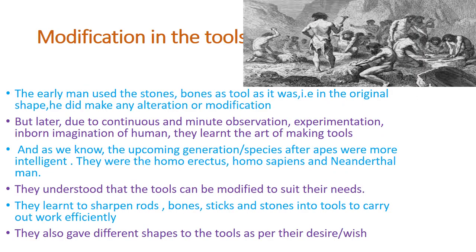Modification in the tools: the early man used stones and bones as tools in their original shape; they did not make any alteration or modification. But later on, due to continuous and minute observation, experimentation, and the inborn imagination of humans, they learned the art of making tools. The upcoming species — homo erectus, homo sapiens, and Neanderthal man — were more intelligent. They understood that tools could be modified to suit their needs, learned to sharpen rods, bones, sticks, and stones, and gave different shapes to tools as per their desire.